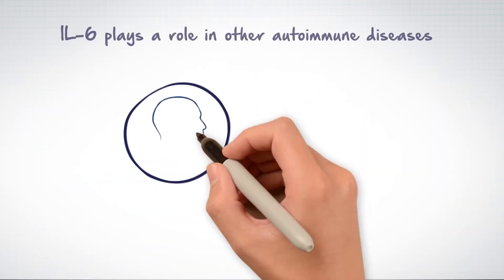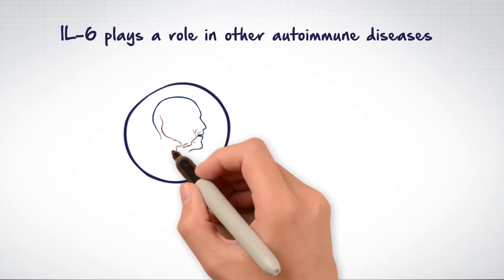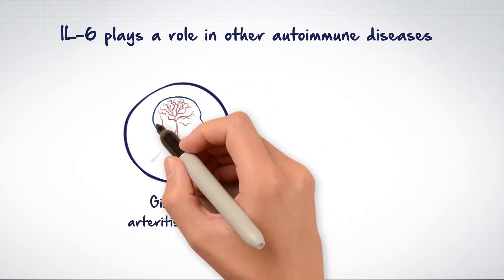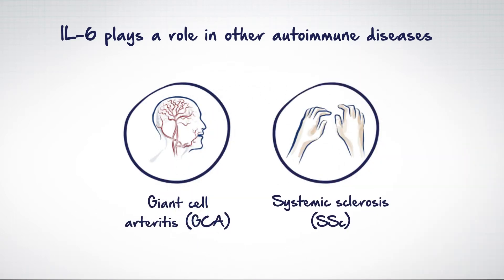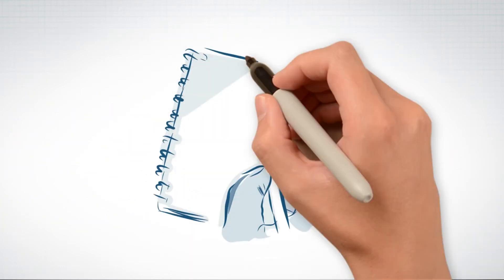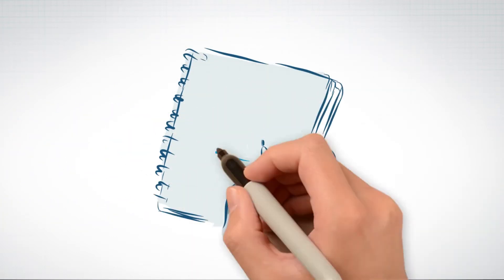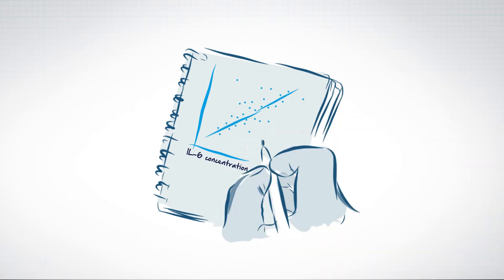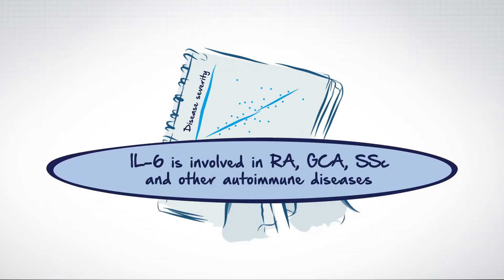Other autoimmune diseases where IL-6 plays a key role in pathogenesis are giant cell arteritis and systemic sclerosis. As in RA, in giant cell arteritis and systemic sclerosis, there is a correlation of serum IL-6 concentration with disease activity, with higher levels associated with increased disease severity.